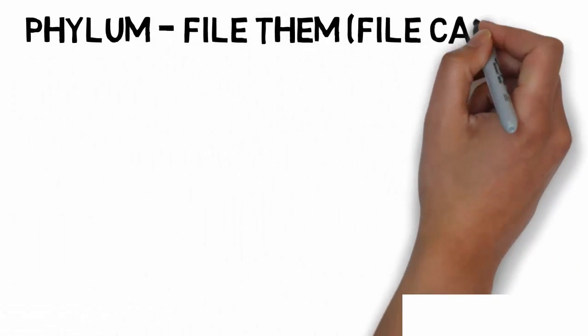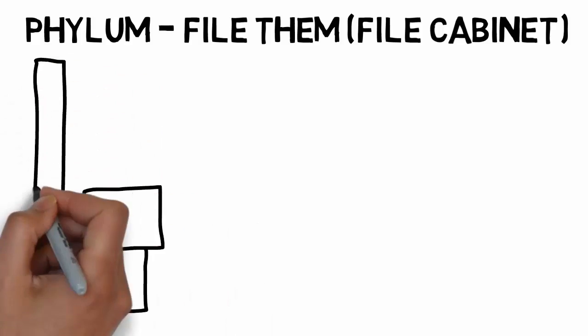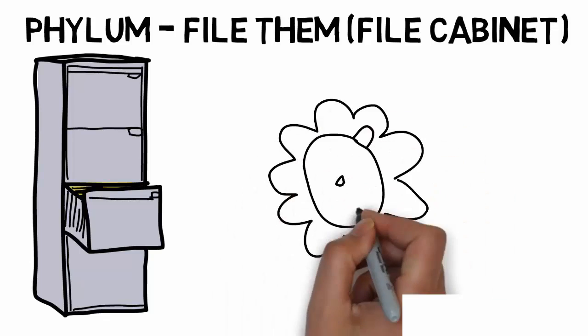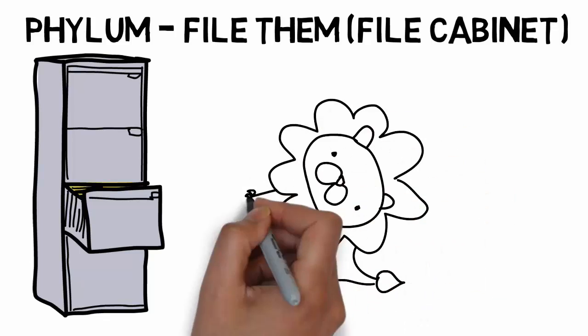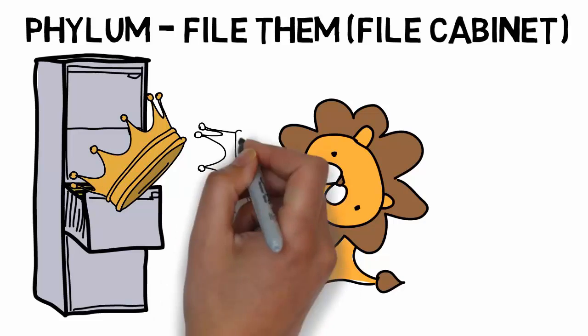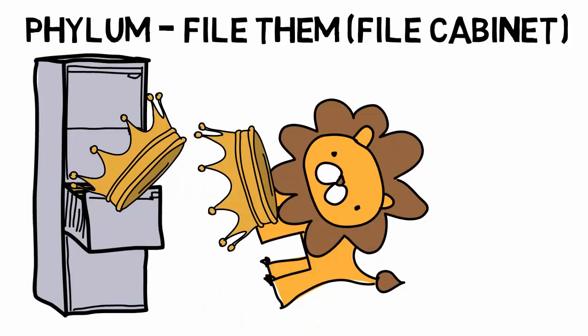Now the next level is phylum. That kind of sounds like 'file them,' so maybe you picture a file cabinet. So maybe the lion wants to clean up all its crowns and starts to file them away in a file cabinet. That's what we're going to picture for phylum.